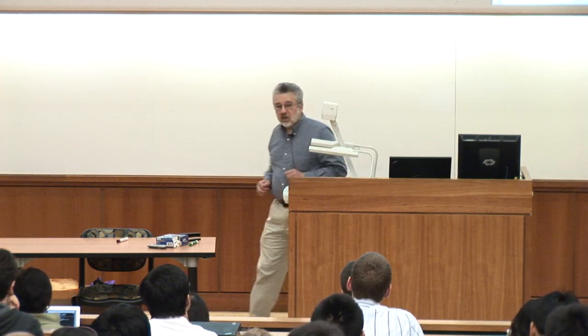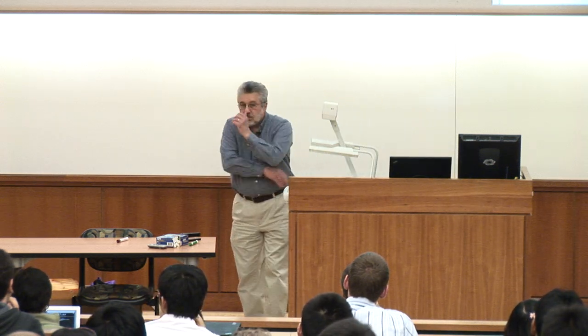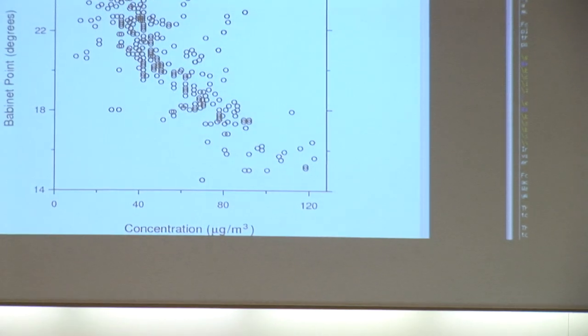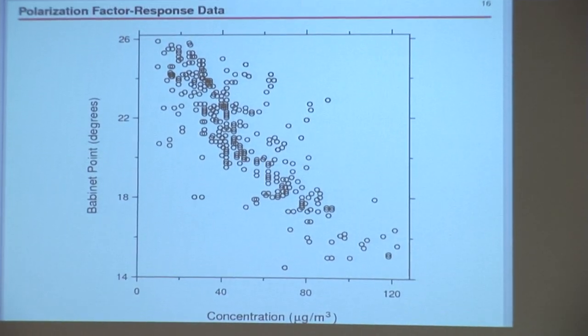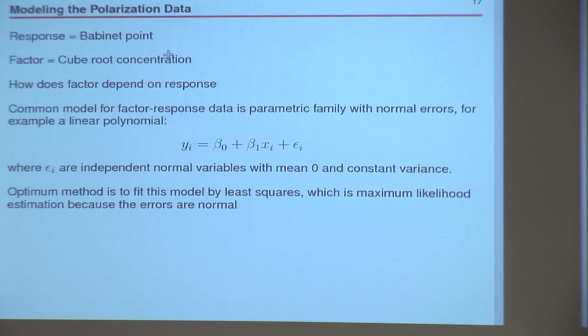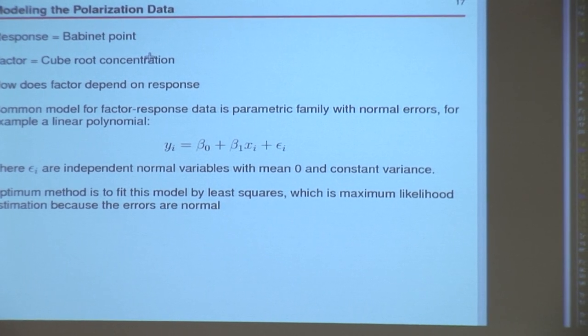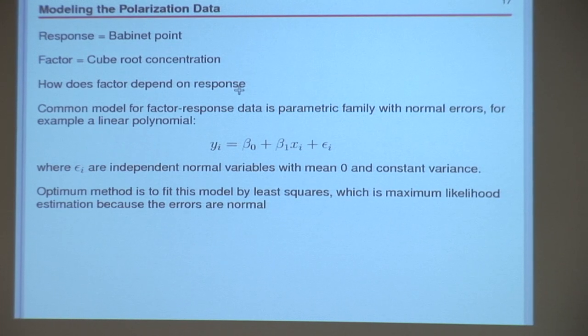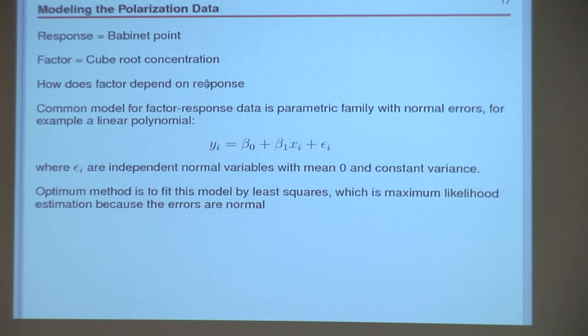Here's a simple example with a small dataset: Babinet point and concentration. Our job is to see how the Babinet point depends on concentration — this is factor-response data. The factor is Babinet point and the response is concentration of particulates in the air. We're going to take the cube root of concentration, transform that variable, and then do the analysis.